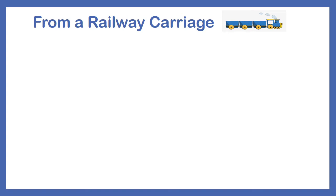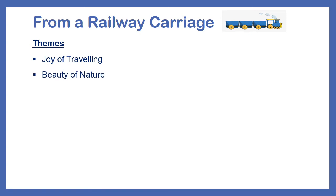Can you tell me what are the themes of this poem? The joy that we get from traveling is the major theme. The beauty of nature also comes as a theme, as seen in the descriptions of meadows, horses, cattle, sides of hills, and plains. Finally, the poverty of human beings is also a theme, as suggested by the scene in which a tramp looks excitedly at the train.